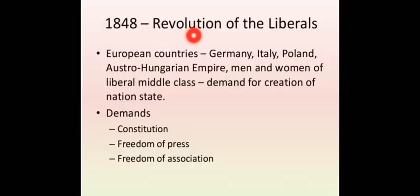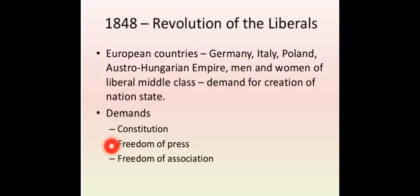In 1848, if you see the revolution of the liberals — as I had explained, liberal people wanted to overthrow conservative regimes and were unhappy with the existing system. European countries like Germany, Italy, Poland, and the Austro-Hungarian Empire saw men and women of the liberal middle class demand the creation of nation-states. Moreover, they demanded: first, a constitution and constitutional form of government; second, freedom of press, meaning there should be no government control over the press — they could publish freely for or against the government; third, freedom of association, meaning liberals could form their own parties and people could make any organization.